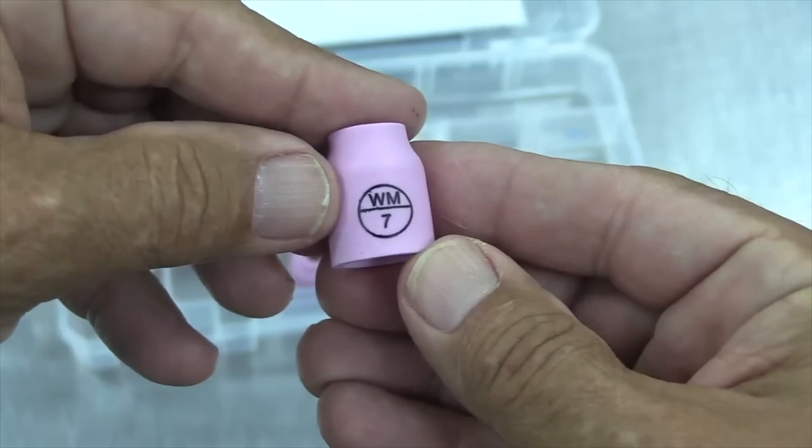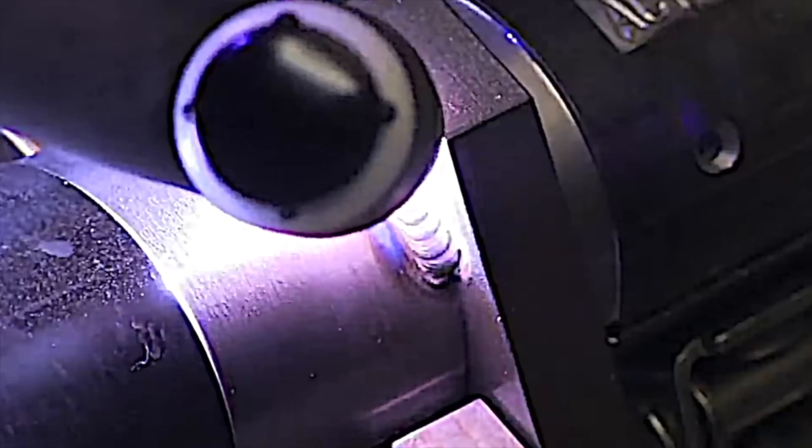If you need a little longer stick out then you can get with the six. Take it up to a number seven. Just increase the argon flow. About two and a half CFH per cup size gets you right in the ballpark usually.